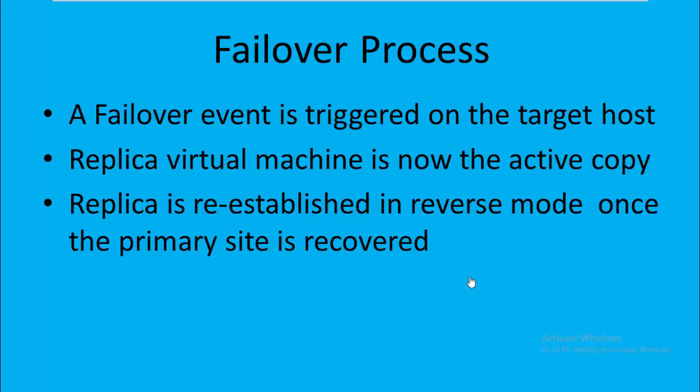Failover process: whenever a failure happens in the primary site, the target host becomes active, so the replica virtual machine is the active copy. And once the primary site is recovered, Hyper-V replica can re-establish replication in reverse mode.